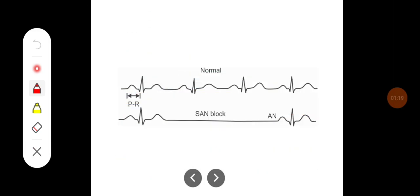This diagram shows normal cardiogram and this is showing the SA node block. When SA node block is there, then the autorhythmic activity is taken by the AV node and this is the complex which is produced by the AV node.